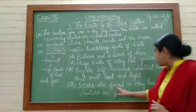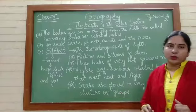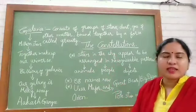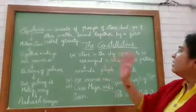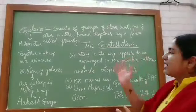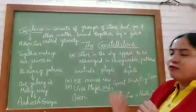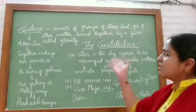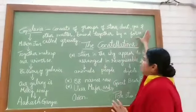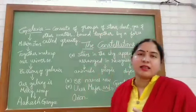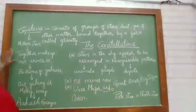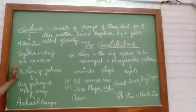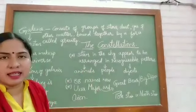Stars are formed in very large clusters or groups. These clusters consist of galaxies. A galaxy consists of groups of stars, dust, gas, and other matter which are bound together by a force called gravity. There are millions of stars in galaxies, and galaxies together make up our universe. There are billions of galaxies in our universe.